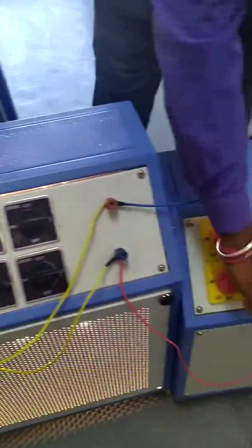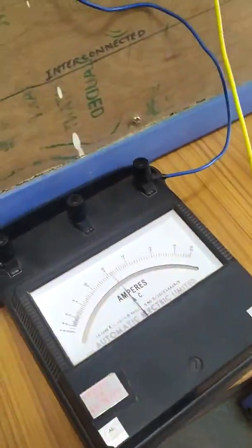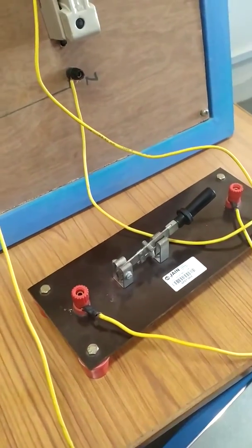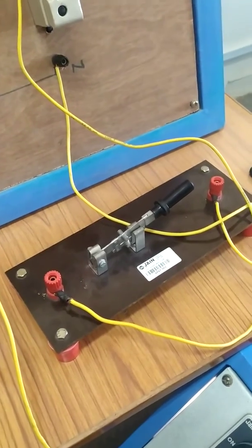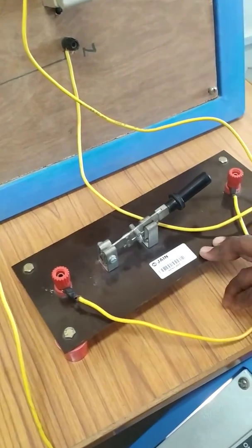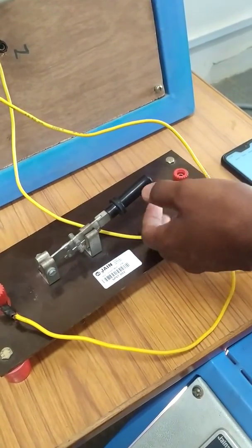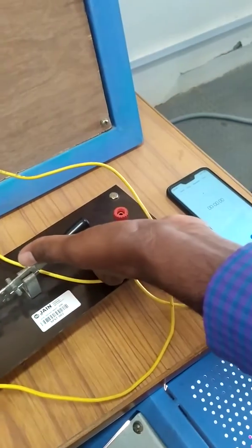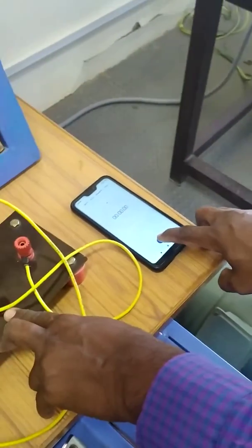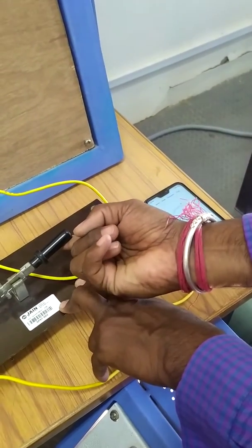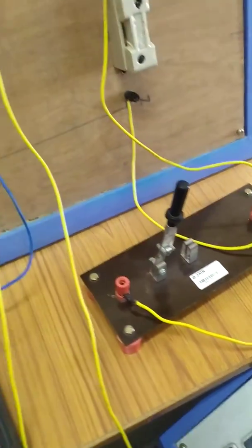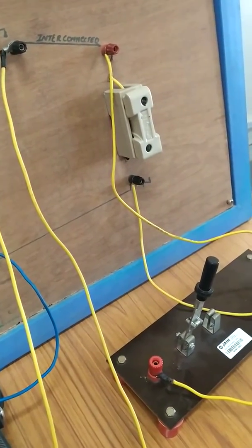Apply the load. Then the SPST switch, now we have to open the SPST switch using the stop. After opening we have to start the stopwatch. Then the fuse will burn out, then we have to note down the readings in the tabular column.